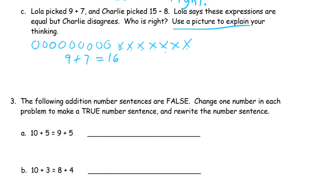And then Charlie picked 15-8. So that's 1, 2, 3, 4, 5, 6, 7, 8, 9, 10, 11, 12, 13, 14, 15. And we've got to cross out 8, so we've got this 10 row here, so we'll cross out from the 10. That's 5 here and 2 more. So that's 7. And then 15-8 equals 7.